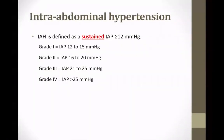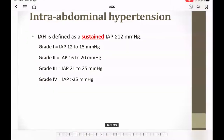The definition of intra-abdominal hypertension is a sustained elevation of intra-abdominal pressure that is more than 12 mmHg, further graded into four categories depending on severity from grade 1 to 4. The highest threshold is 25 mmHg and the minimum is 12 to 15 mmHg.